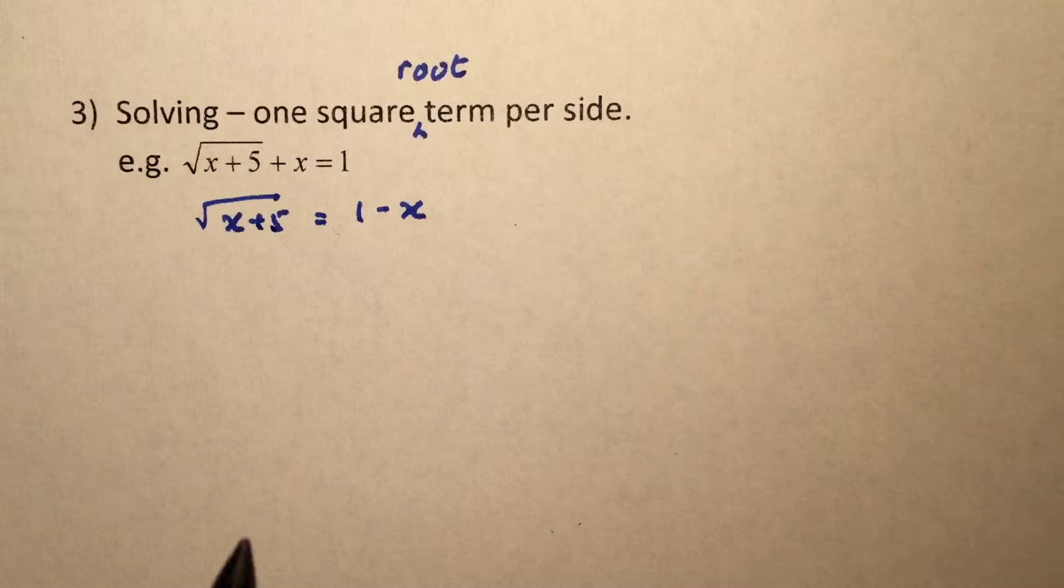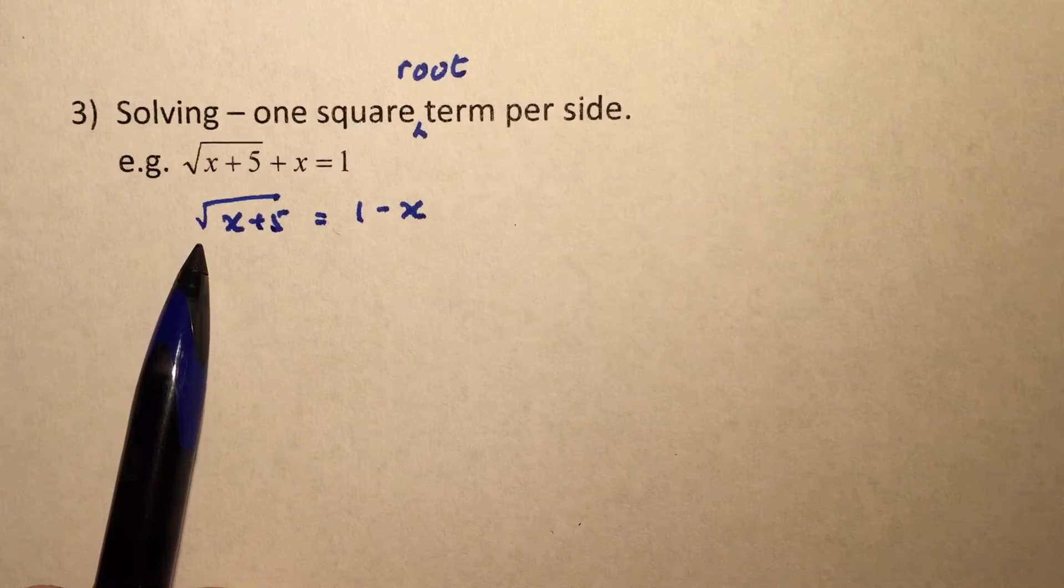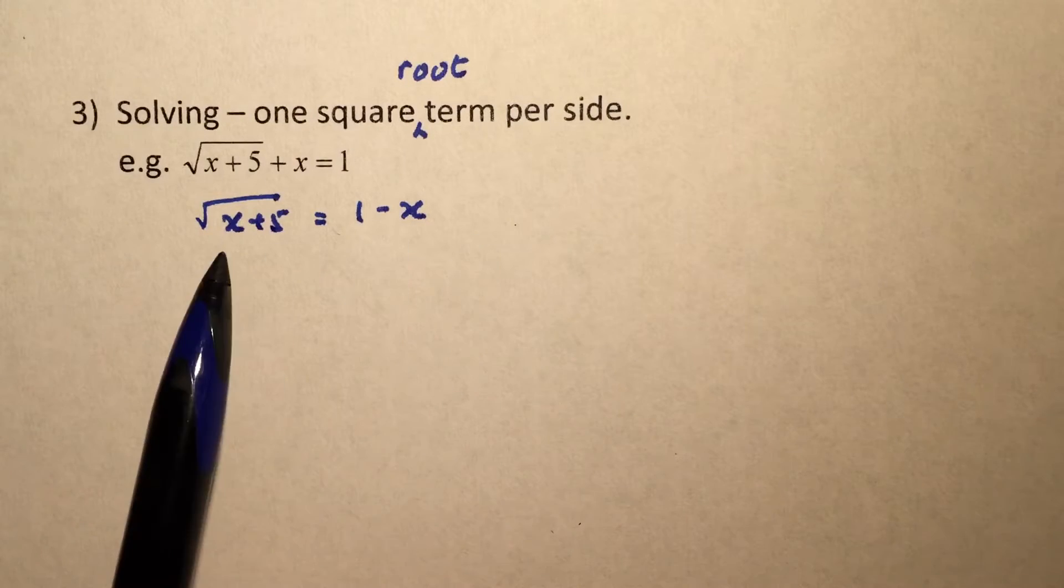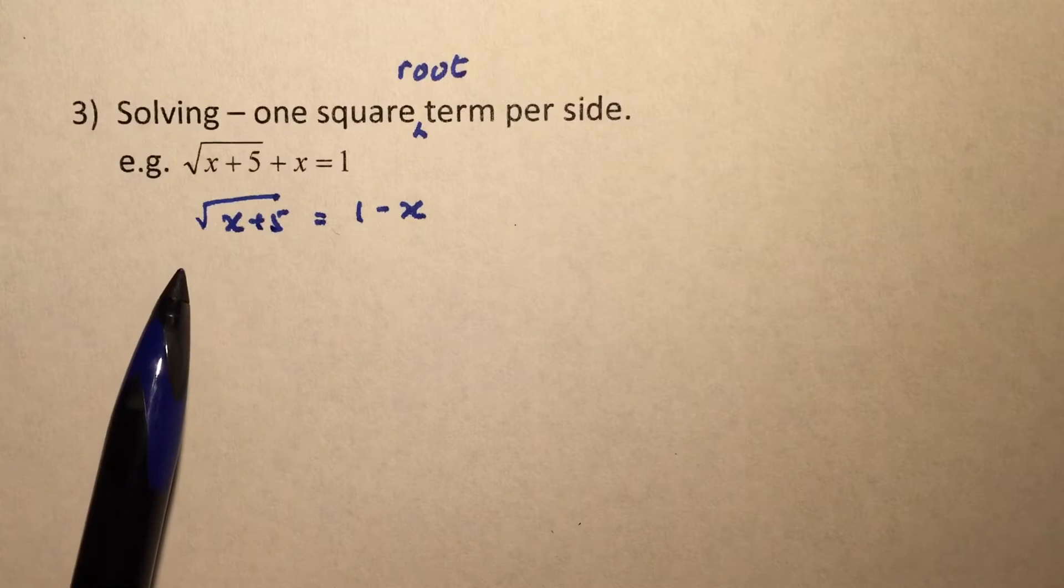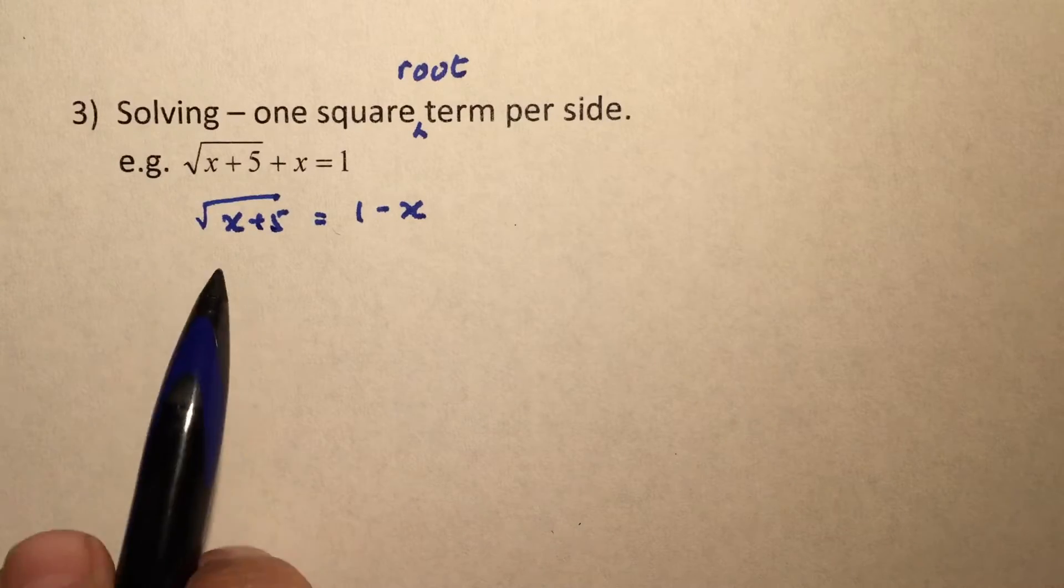Why we want to do this is because in order to get rid of the square root, we were going to take a square on both sides. That's why we want to keep it to one square root term on the left-hand side and that's it, so that it will be easy for us to do a squaring.